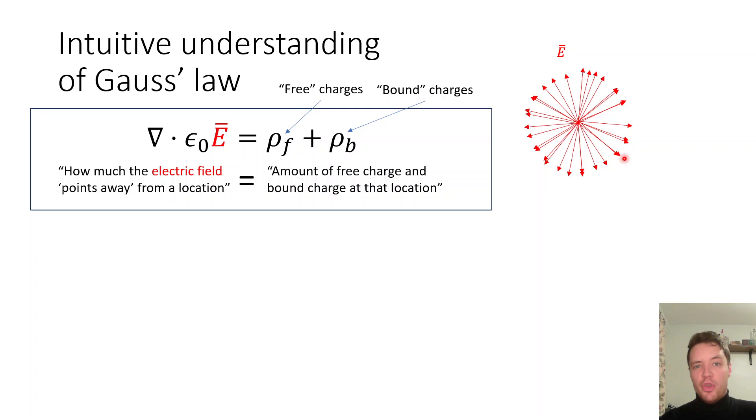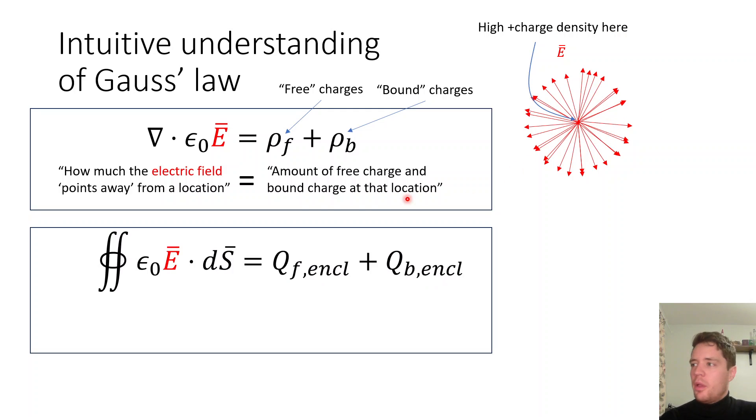So, if you see some location in the universe where the E-field lines seem to be pointing away from some region right here, you know that you must have a very high charge density at that specific point.